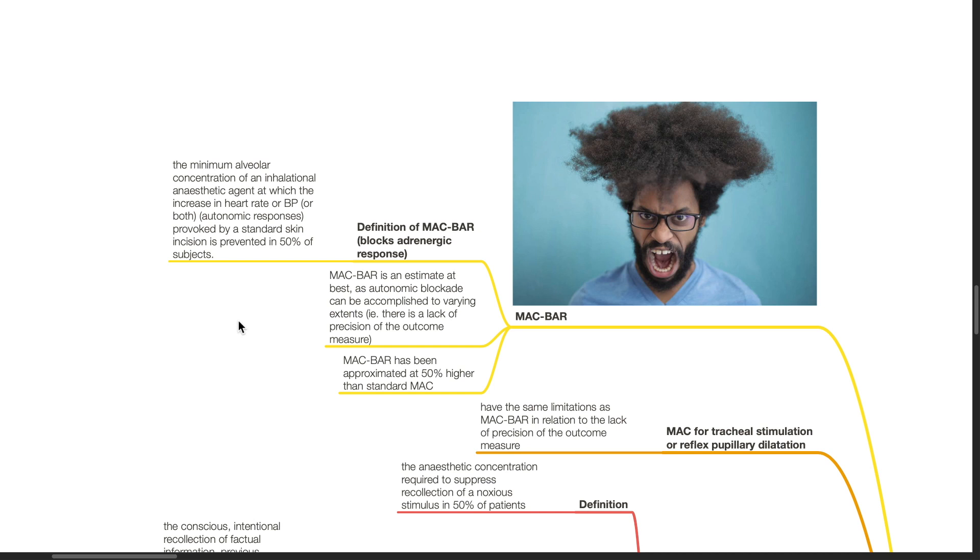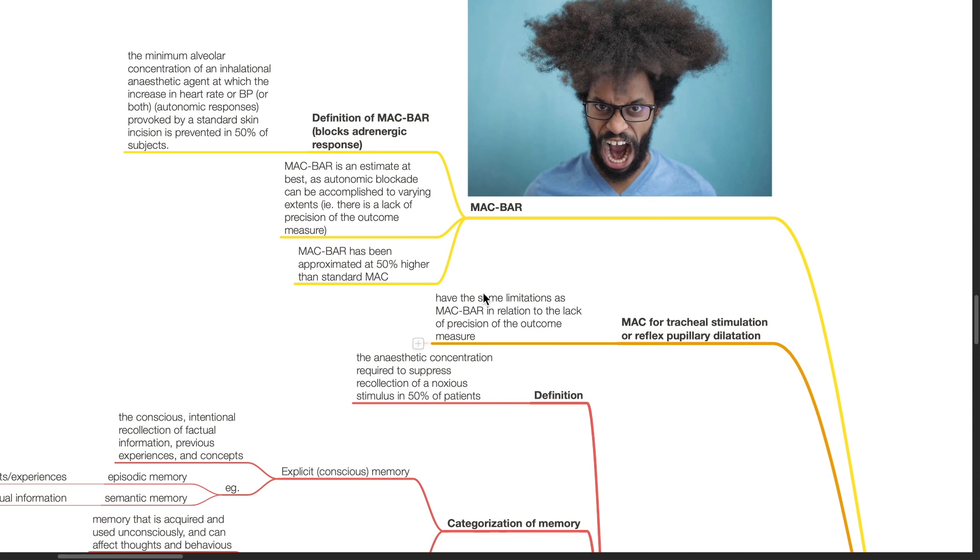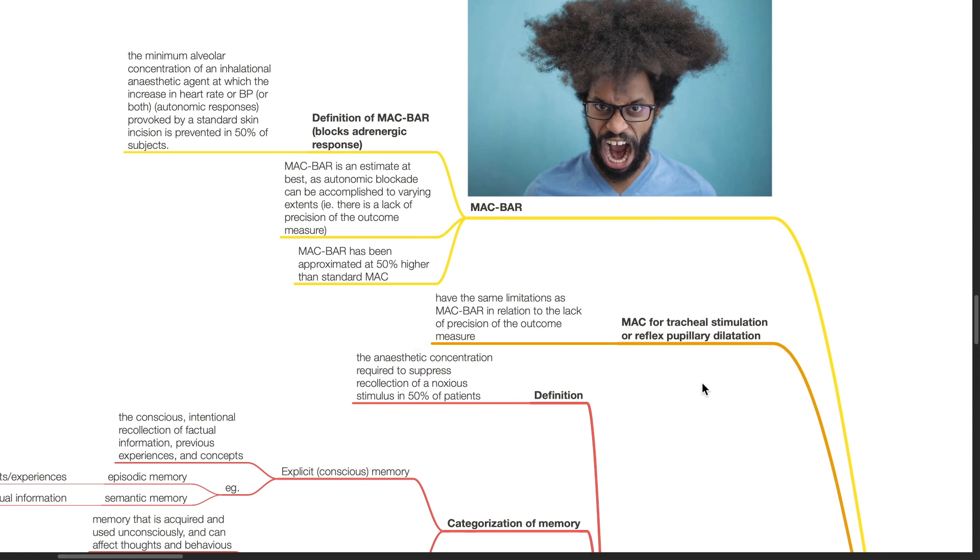MAC BAR is an estimate at best, as autonomic blockade can be accomplished to varying extents, i.e. there is a lack of precision of the outcome measure. MAC BAR has been approximated at 50% higher than standard MAC. MAC for tracheal stimulation or reflex pupillary dilatation has been investigated, and these have the same limitations as MAC BAR in relation to the lack of precision of the outcome measure.